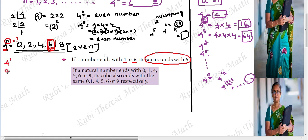Let's check: 4 power 1, 4 power 2, 4 power 3, 4 power 4, 4 power 5, 4 power 6, 4 power 7, 4 power 8 — we will examine the ones place digit for each.